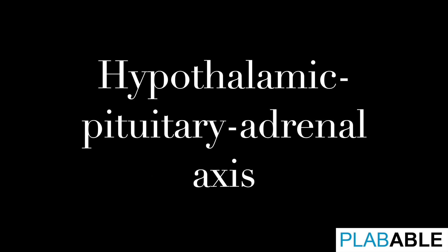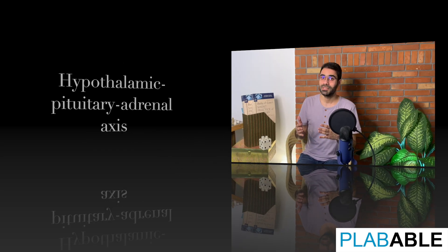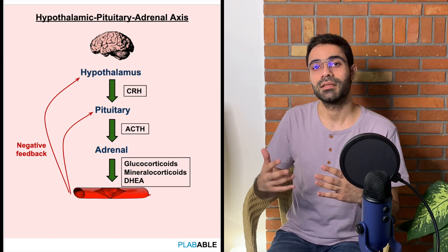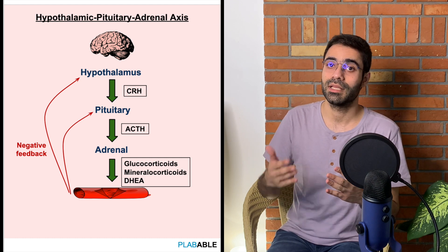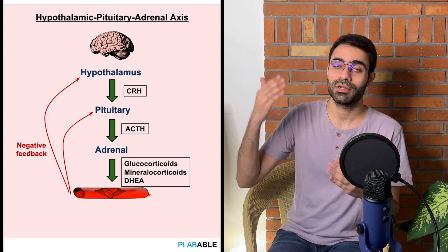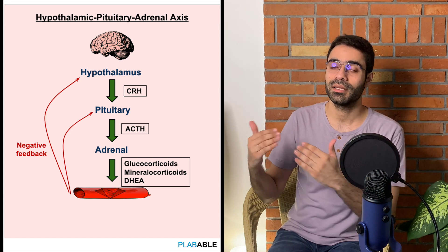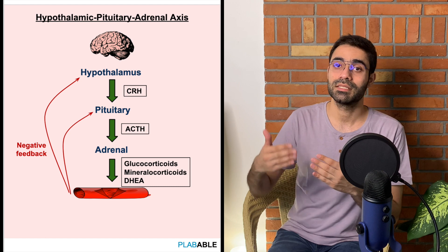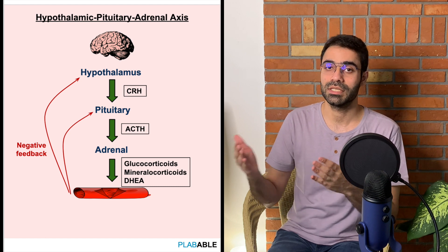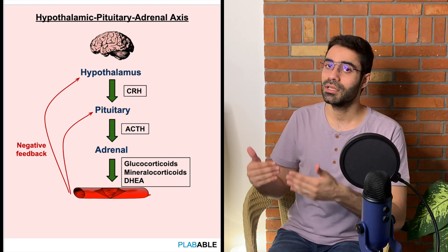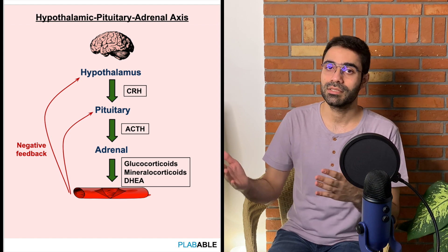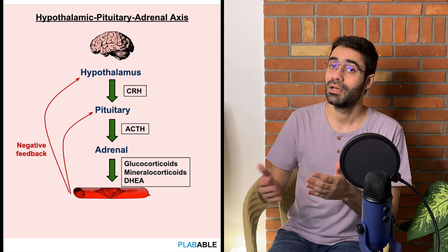Before we move on to our main topics, let's brush up our concept about the functioning of the hypothalamic pituitary and adrenal axis. The hypothalamus, which is a part of our central nervous system, helps in the release of various hormones. One of them is corticotrophin releasing hormone, which is released from the hypothalamus and acts on the anterior pituitary to further release ACTH, which goes and acts on the adrenal glands to further release mineralocorticoids and cortisol.